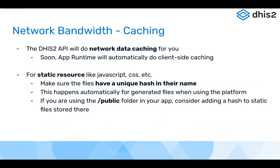Another consideration when talking about network bandwidth is caching. In a lot of cases the DHIS2 API will do intelligent network caching — the browser will have cache headers on certain requests and won't request that data again. But that's not always true, and you want to make sure you're doing a trade-off where you're not showing the user stale information. You want to make sure it's always as up-to-date as possible.